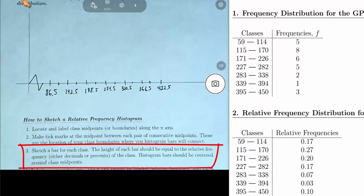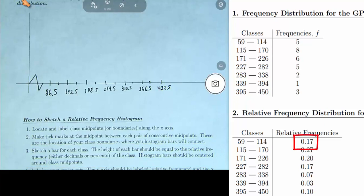So now let's go ahead and do step three, sketch a bar for each class. So the first class has a relative frequency of 17%.